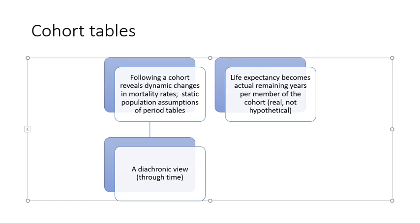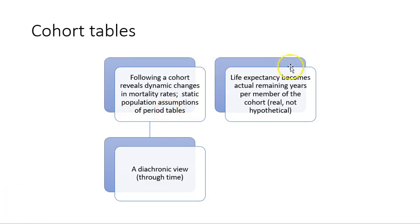When we look at a cohort table, it may look similar, but it's actually the same group of people moving through the different age categories on the table. It's a more dynamic type of table giving you a longitudinal understanding of a population, as opposed to the static population assumptions embedded in a period table. Another nice thing about cohort tables is that the column on life expectancy actually becomes the actual number of remaining years for that particular population.